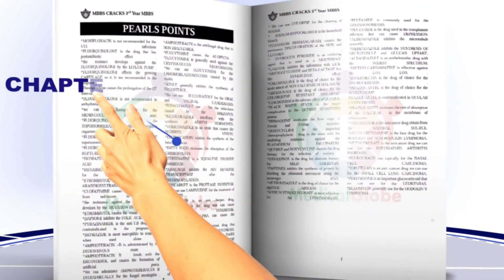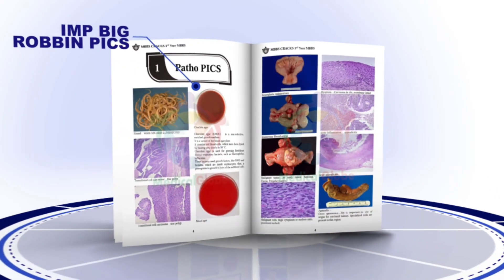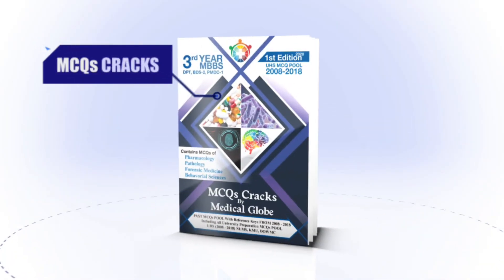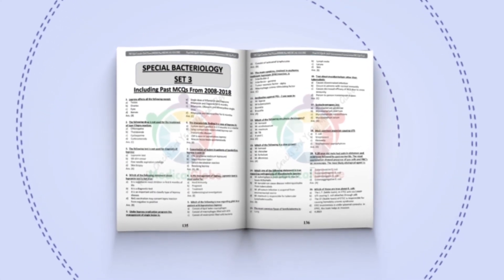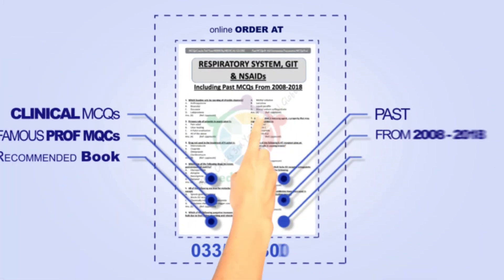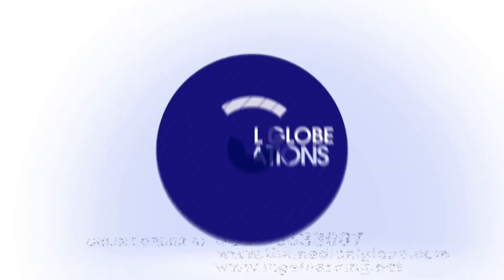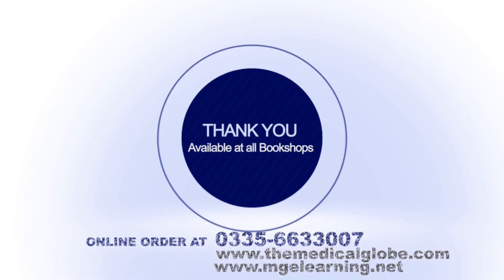اس کے علاوہ ہر chapter کے important pearls، forensic کی summary، Big Robbins کی important تصویریں، اور ہر subject کی important histopathology pictures شامل ہیں۔ Medical Globe پیش کرتا ہے MCQs Cracks — تمام universities کے important MCQs اس میں شامل ہیں بشمول UHS۔ ابھی order کریں: 0335-6663007۔